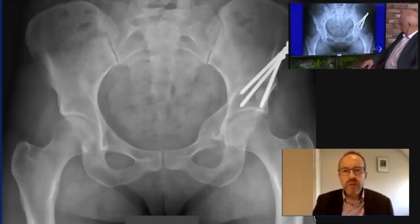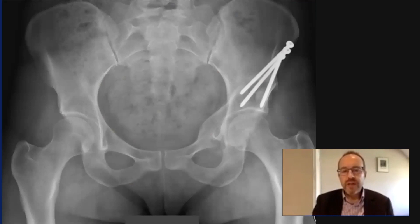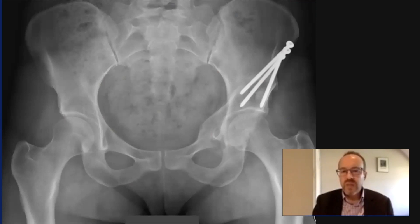The next slide shows the outcome after a successful Ganz osteotomy — named after the surgeon who developed it — for somebody with developmental dysplasia. The coverage of the femoral head is now much better, with a more correct alignment of the acetabulum, so that hopefully this young adult will be able to have a long lifespan to the native hip joint.